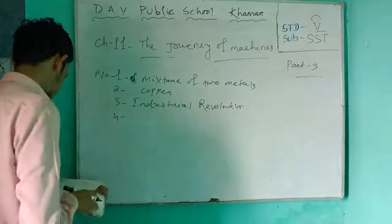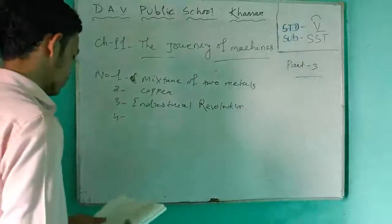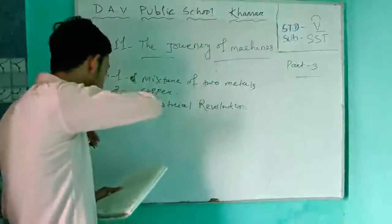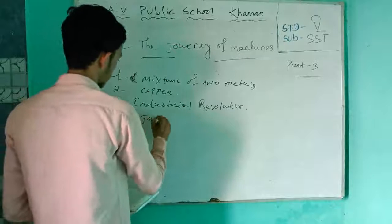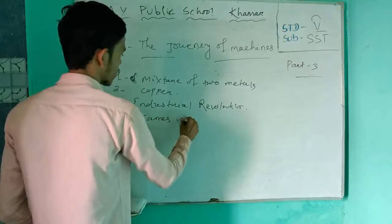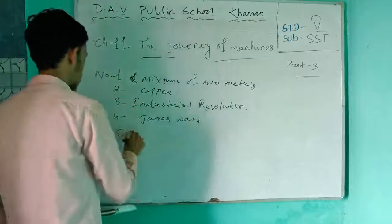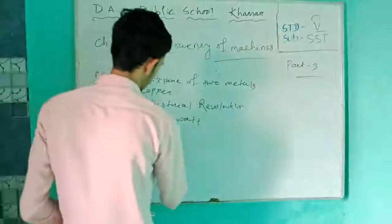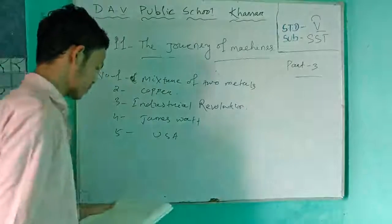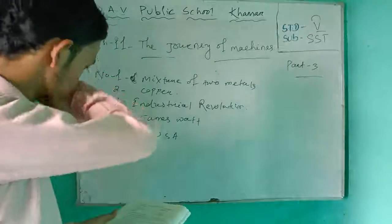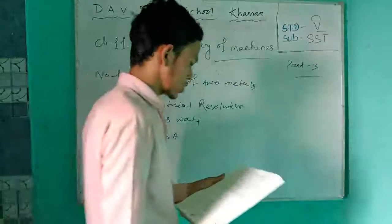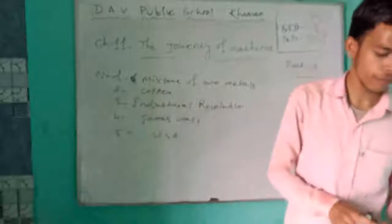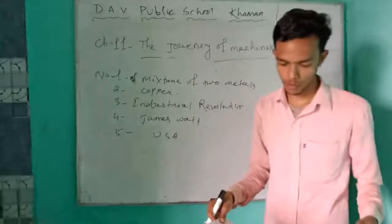Number four — who invented the steam engine? James Watt. Number five — mineral oil was found first in the USA. Short question: who developed the machine which could be run by petrol?